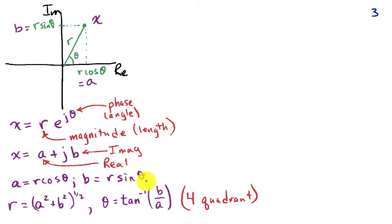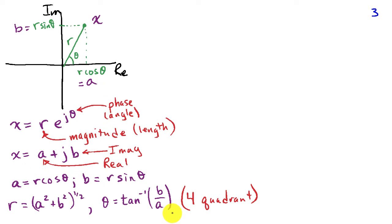Writing x in rectangular coordinates as a plus jb, the real part a equals r cosine theta and the imaginary part b equals r sine theta. If given rectangular coordinates — that is, knowing a and b — I can find r as the square root of a squared plus b squared, and find the angle by taking the arctangent of b divided by a. When finding the angle, you need to use a four-quadrant arctangent, paying attention to which quadrant you're in to correctly find theta.